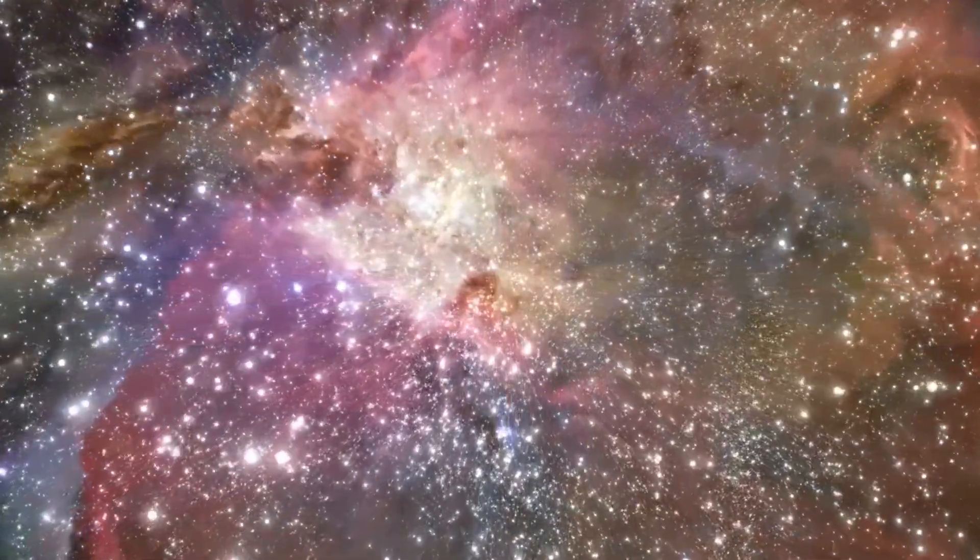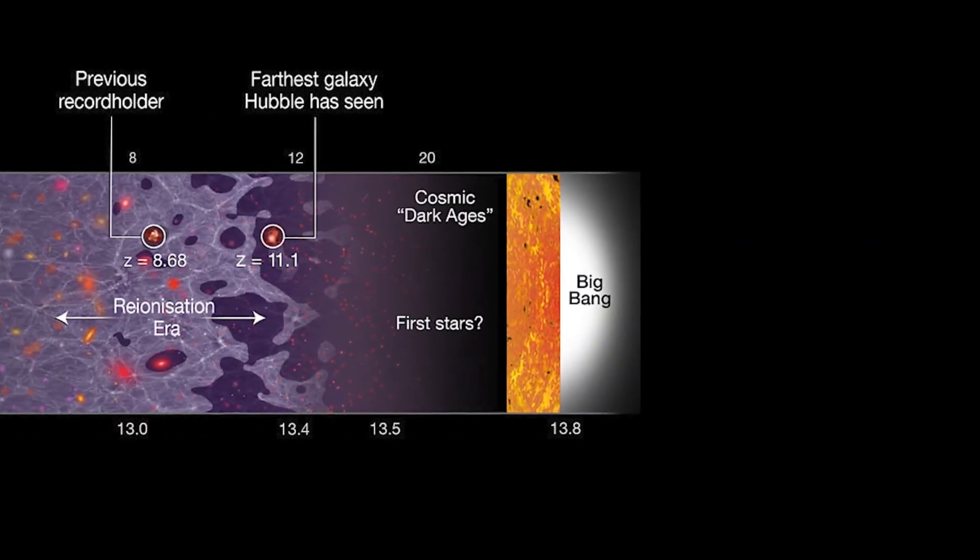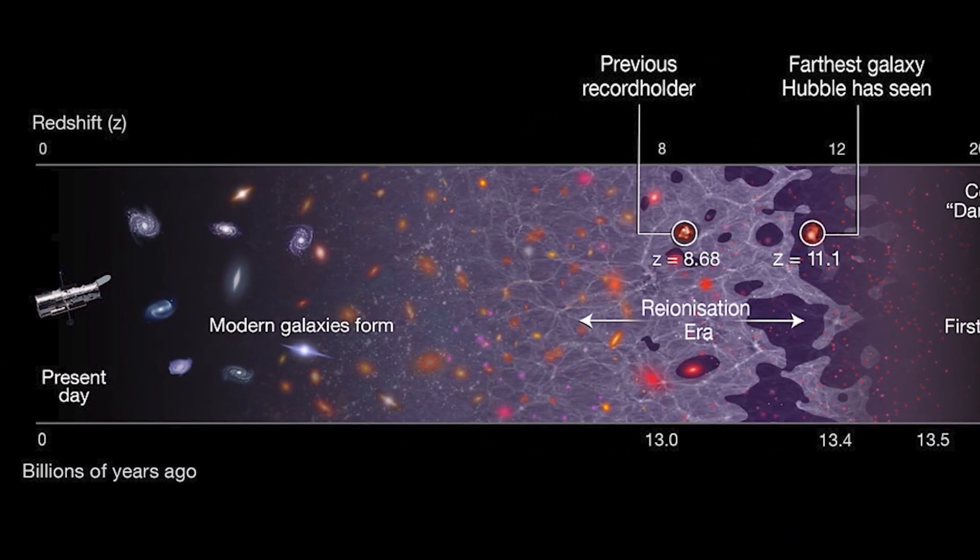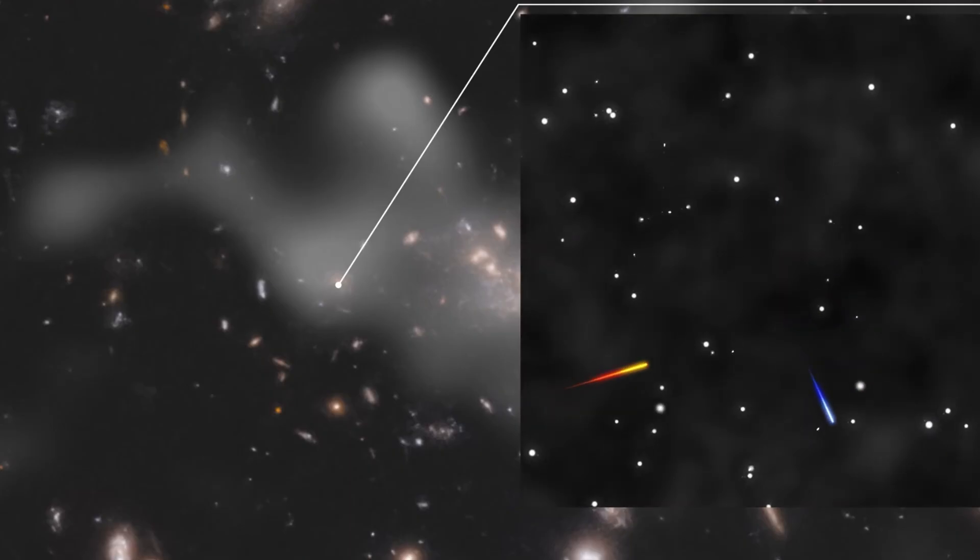The spectacular image shows a section of the constellation Fornax, which lies southwest of Orion. Although countless fascinating astronomical formations present themselves in an exuberant variety, the HUDF actually represents only a 40 millionth of the entire sky.